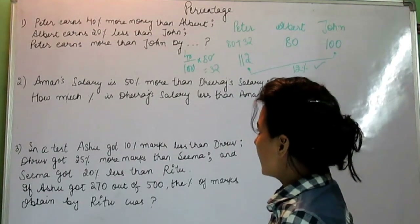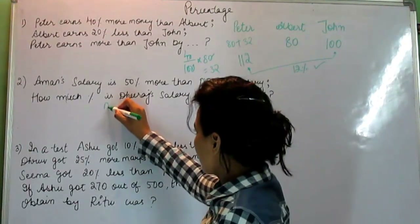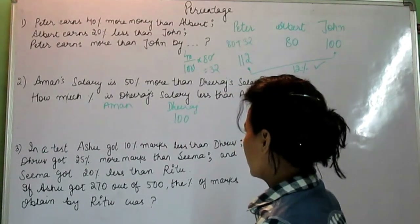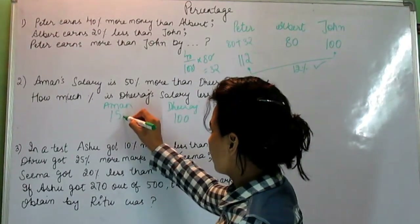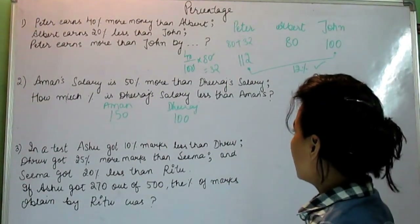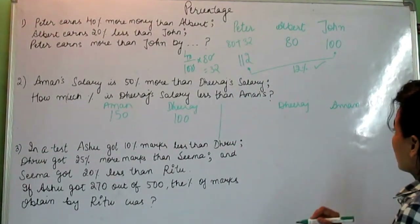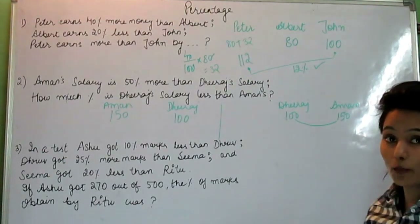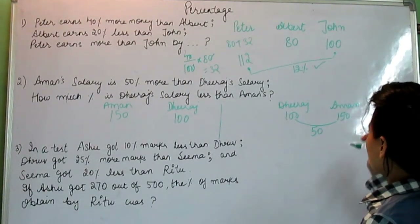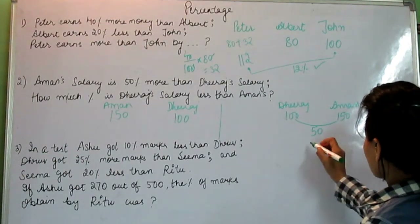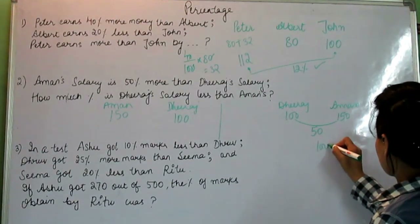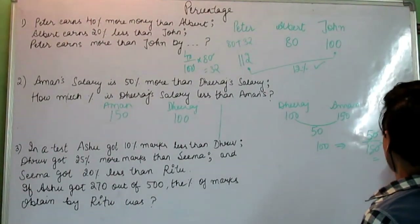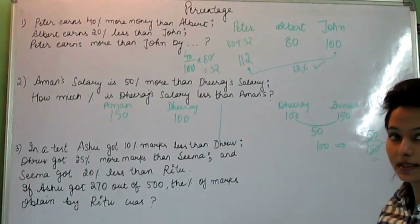The second question: Amal's salary is 50% more than Dhiraj's. If Dhiraj is 100, Amal's salary will be 150. The question is how much percent is Dhiraj's salary less than Amal's? Dhiraj was 100 and Amal was 150 — that is 50 more than Dhiraj. We calculate percentage on 150, so it will be 50 divided by 150 into 100, which gives us 33 and 1/3 percent.